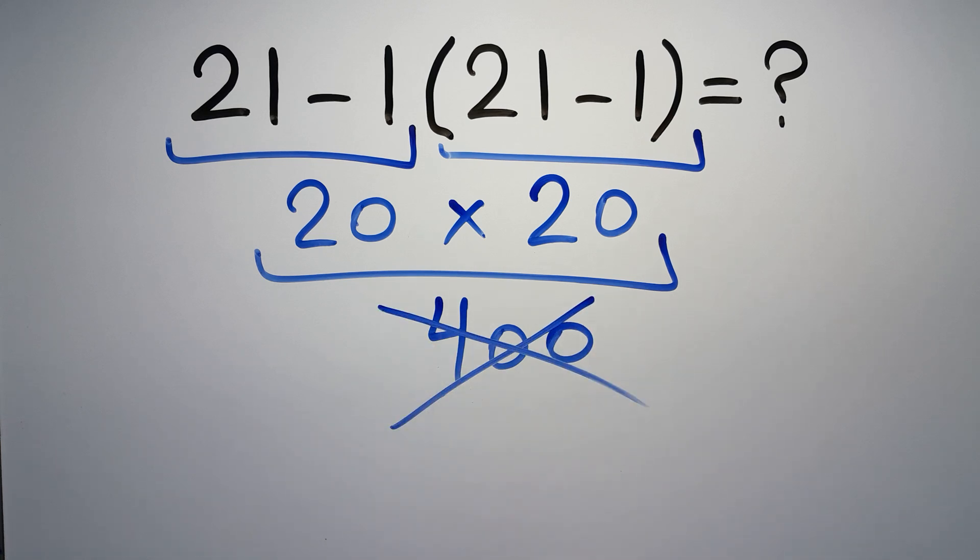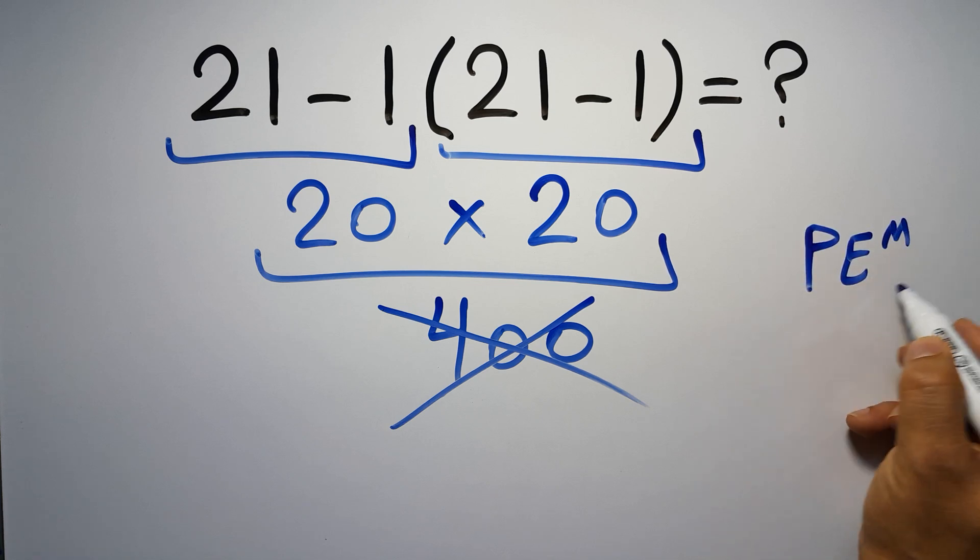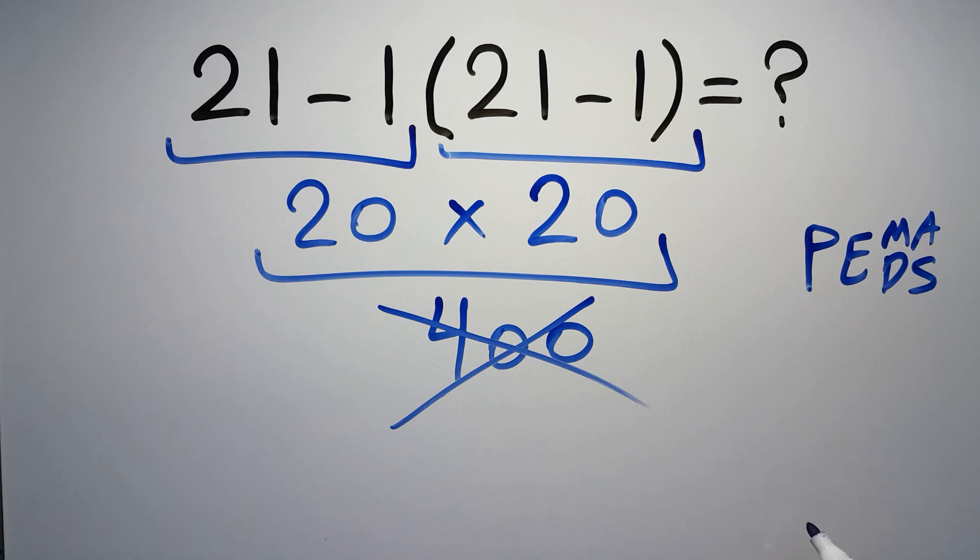because according to the rule of operations, first we have to do parentheses, then exponents, then multiplication or division, and finally addition or subtraction,